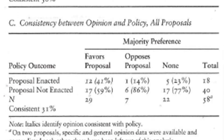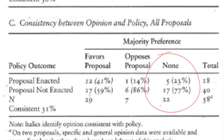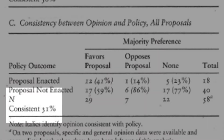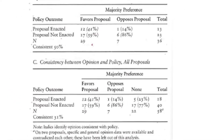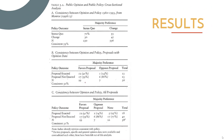But now look at consistency between opinion and policy with all proposals in Burstein's sample — all 60 policy proposals, including those without opinion data. Things take a turn: the consistency statistic is now only 31 percent. That is substantially different, lending support for the idea that sampling bias is potentially playing a role and that even Monroe's estimates may be overestimating the impact of public opinion.